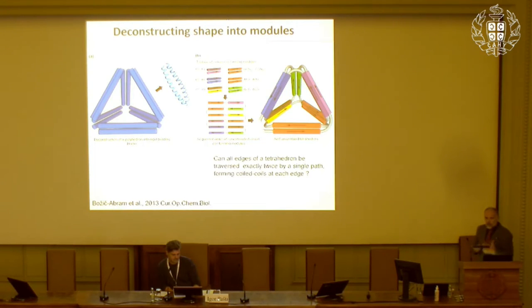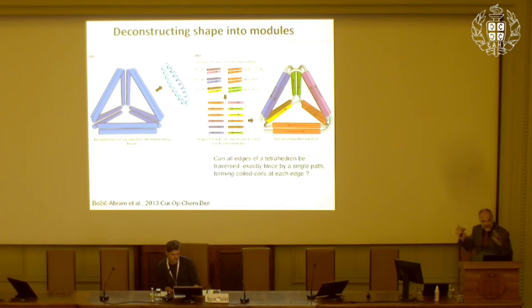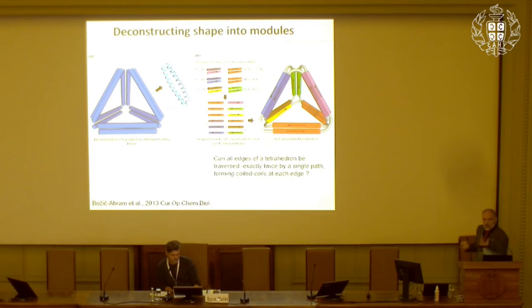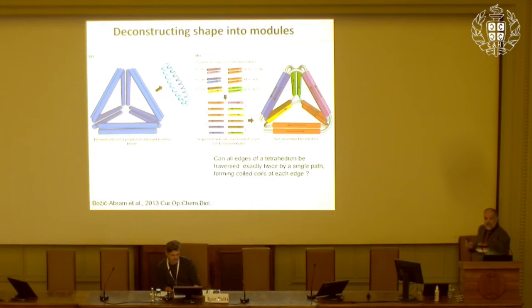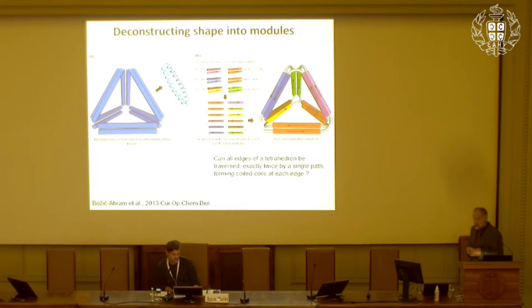We want to make polyhedra, with which you can make almost any type of shape. The idea is that the edges of the polyhedra are composed of a coiled-coil dimer. The task is to design the pathway of the polypeptide chain so it will traverse each edge of the coiled-coil dimers exactly twice, forming a stable tertiary structure — a new type of scaffold.